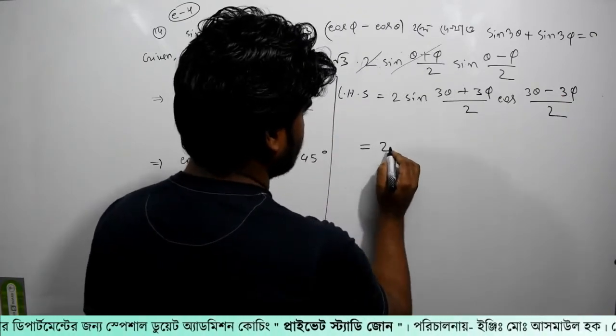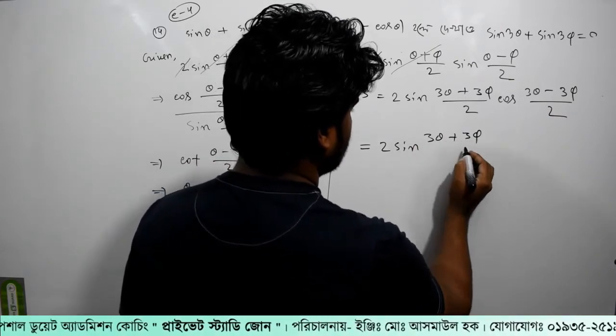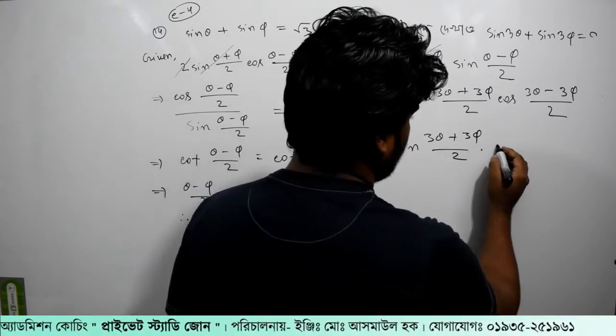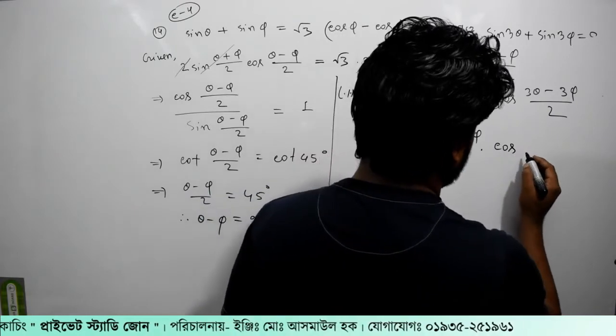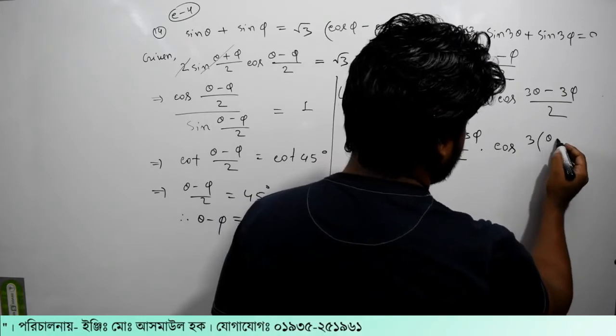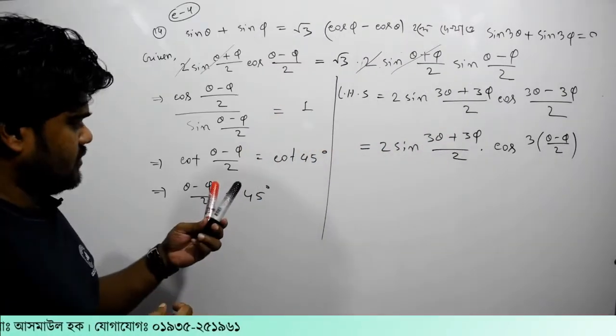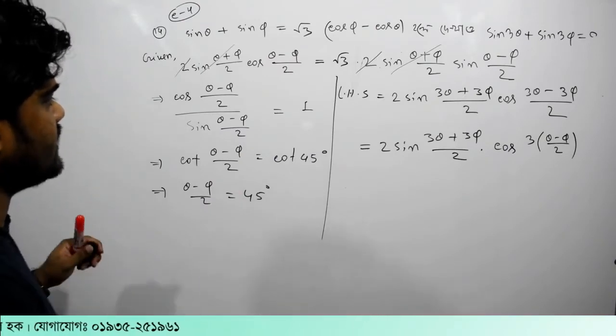Substituting, we get 2 sin (3 theta plus 3 phi)/2 times cos (3 theta minus 3 phi)/2. We have 3 common here.